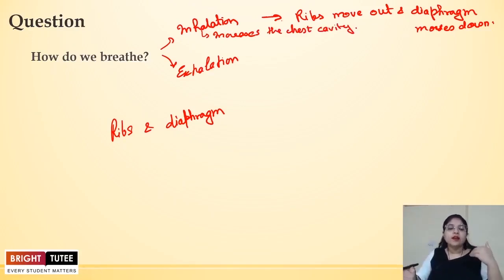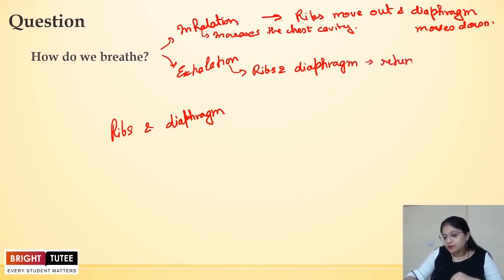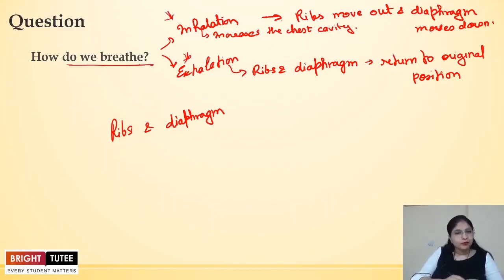When exhalation happens, ribs and diaphragm both return to their original position. Because of this, the space in the chest cavity decreases and the air is pushed out, and this is the process of exhalation. So in this way we see how inhalation and exhalation takes place, and this is how we breathe.